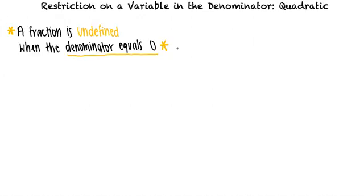This video will cover the topic of restriction on a variable in the denominator — quadratic. In these problems, we will be asked to find values of the variable that make the expression undefined. A fraction is undefined when the denominator equals 0, because we cannot divide a number by 0. We can determine what values of a variable make an expression undefined by setting the denominator equal to 0 and solving for the variable.